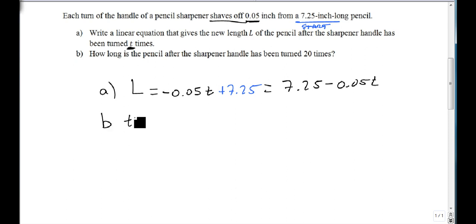Part B says, well what happens if we let t be 20? Let's turn it 20 times. Well that just means we're going to plug in. Our L is going to equal minus 0.05 times 20 plus 7.25. Well minus 0.05 times 20 is minus 1 plus 7.25, and so minus 1 plus 7.25 is 6.25. So if we turn it 20 times in the pencil sharpener, our pencil is now 6.25 inches long.